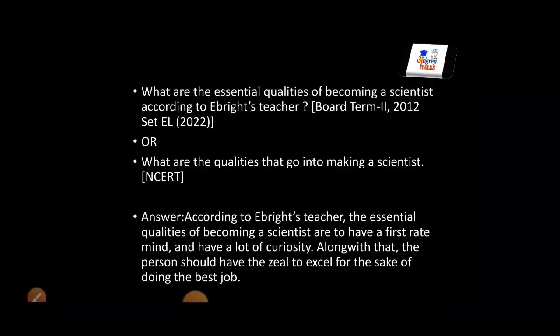You can see this is a repeat question — asked in 2012 and expected in 2022. What are the essential qualities if you want to become a scientist? An A-grade mind is needed, curiosity is needed, zeal is needed — zeal meaning to excel, to move forward, to be the best within yourself.